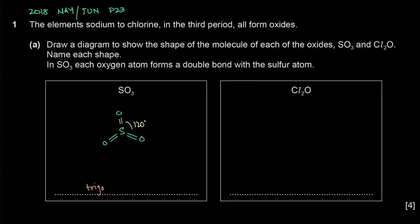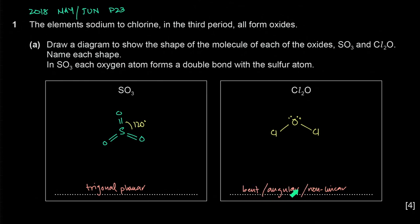For Cl₂O, oxygen is single-bonded to two chlorine atoms — similar to H₂O. Oxygen has six outer electrons; two are bonded with the chlorines, and oxygen has two lone pairs. The total number of sigma bonds plus lone pairs is four, so we have sp³ hybridization. The shape is called bent, angular, or nonlinear — all three are acceptable.